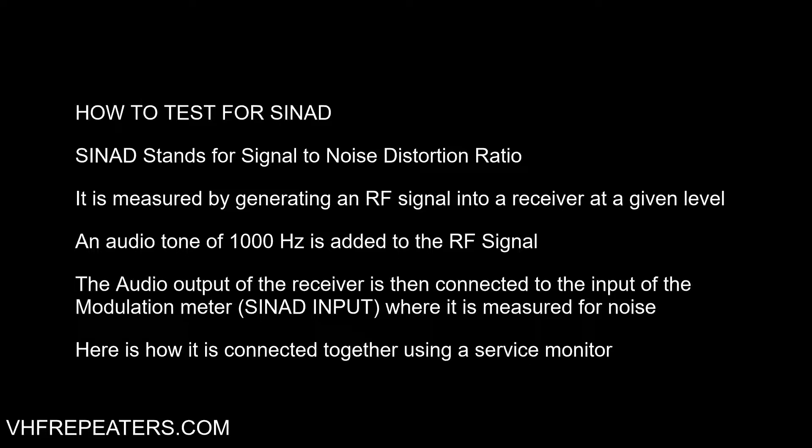How to test for SINAD. SINAD stands for Signal to Noise and Distortion ratio. It is measured by generating an RF signal into a receiver at a given level. An audio tone of 1,000 Hz is then added to the RF signal. The audio output of the receiver is then connected to the input of the modulation meter, otherwise known as the SINAD input, where it is measured for noise.